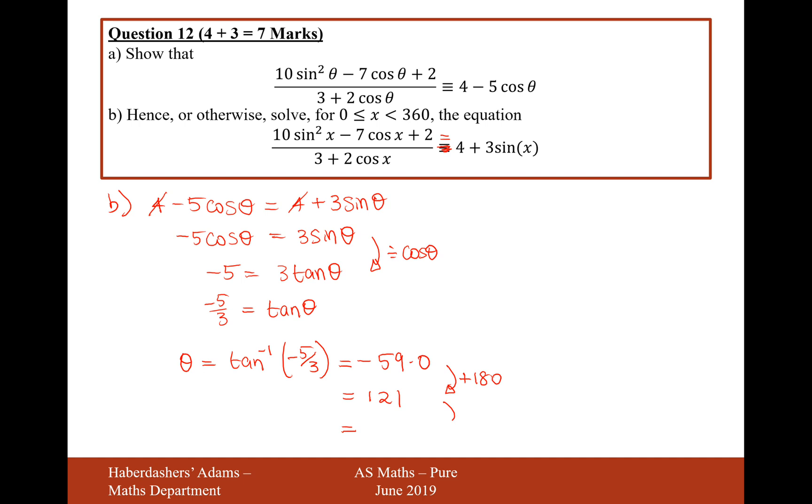So let's add 180 degrees again, add 180, and that gives us 301. So therefore, x equals 121 and 301 to 3 significant figures. It doesn't actually say in the question how accurate it wants our answers, so we'll just assume that it's 3 significant figures then. And there we are. That's the answer for question 12 there.